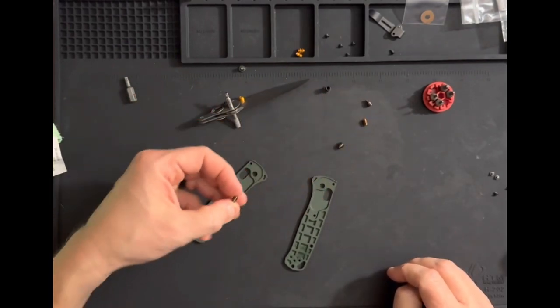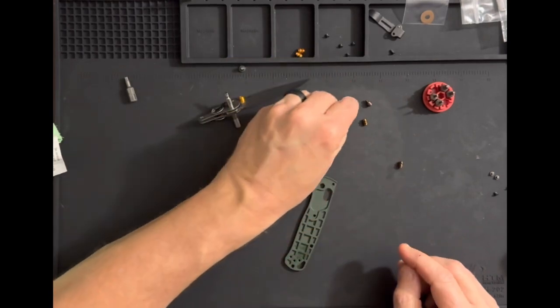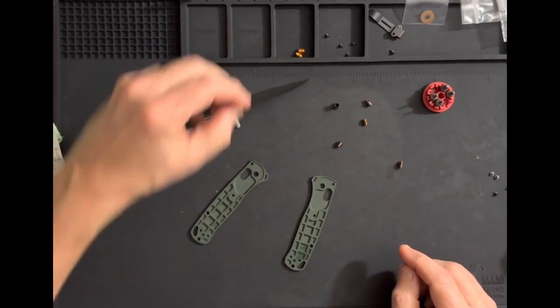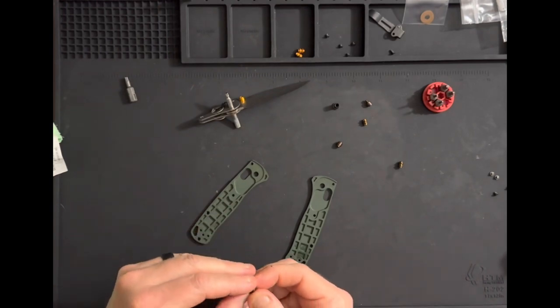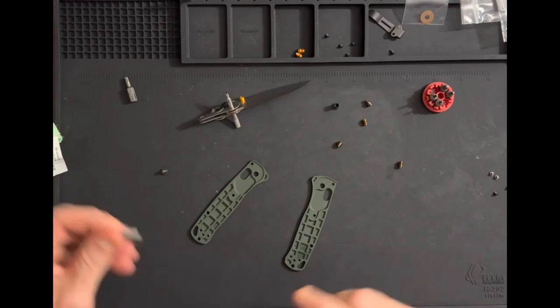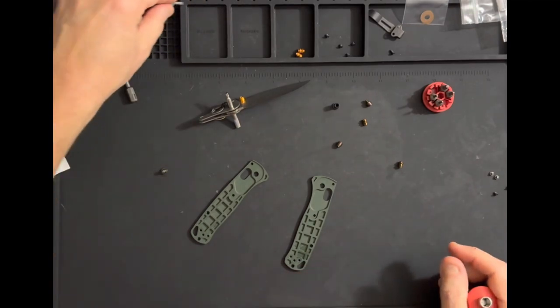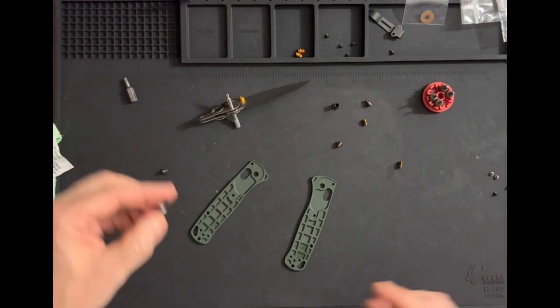We're going to install these and put her all back together. I think I got it pretty well cleaned up. The only part I still need to clean is the pivot. I don't see any Loctite on this at all, which is good. I believe this is a T10 on the pivot.